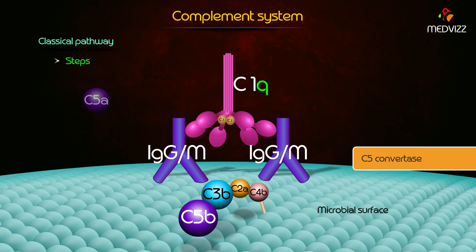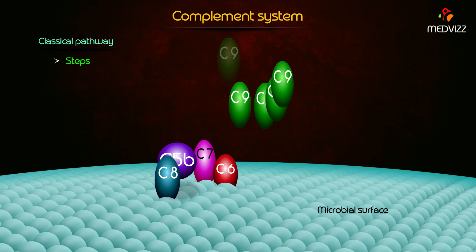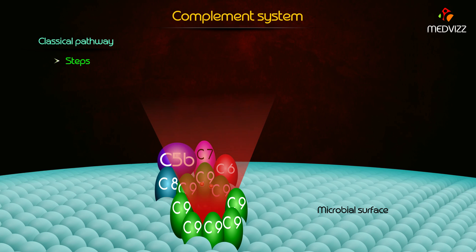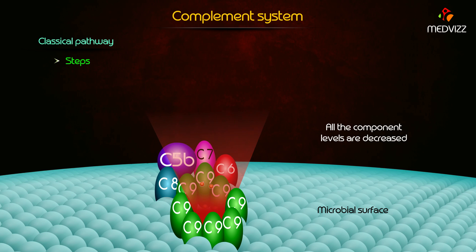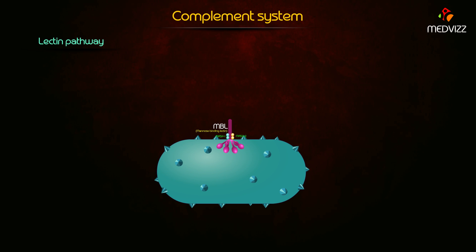C5 is converted into C5a and C5b. C5 to C9 is called the membrane attack complex, leading to cytolysis. At the end, all complement levels are decreased after complete activation of the complement pathway.